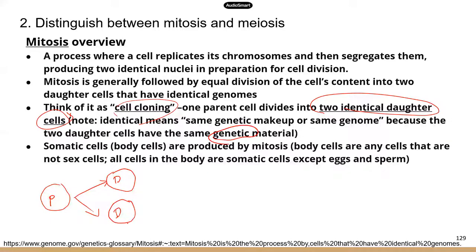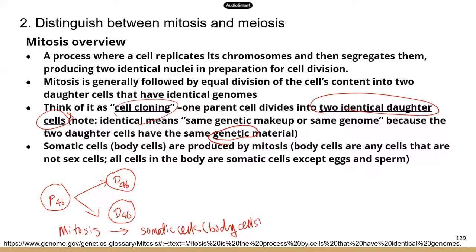In terms of the number of chromosomes, if the parent cell has 46 chromosomes, then the two daughter cells will each have 46 chromosomes — assuming nothing goes wrong in the process. That process is known as mitosis, and it's the process we use to produce somatic cells, which are body cells. Body cells are pretty much all the cells in your body — as long as it's not a sex cell, it's a body cell. Liver cells, brain cells, skin cells — those are all somatic cells produced by mitosis.